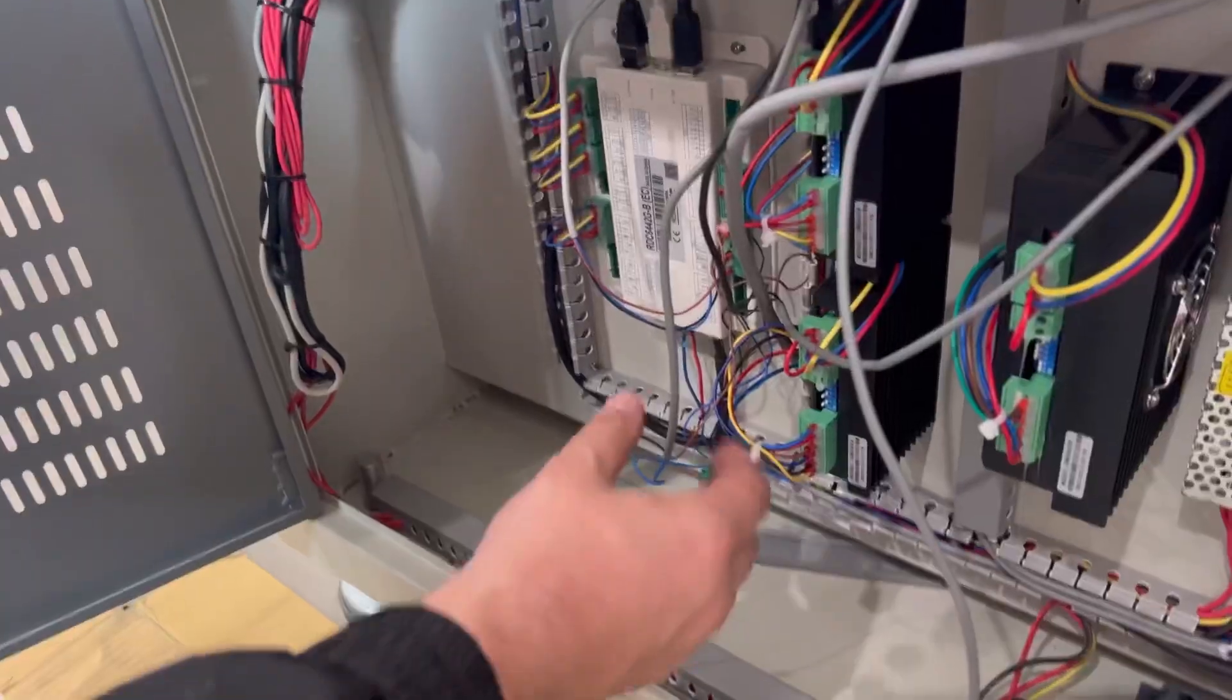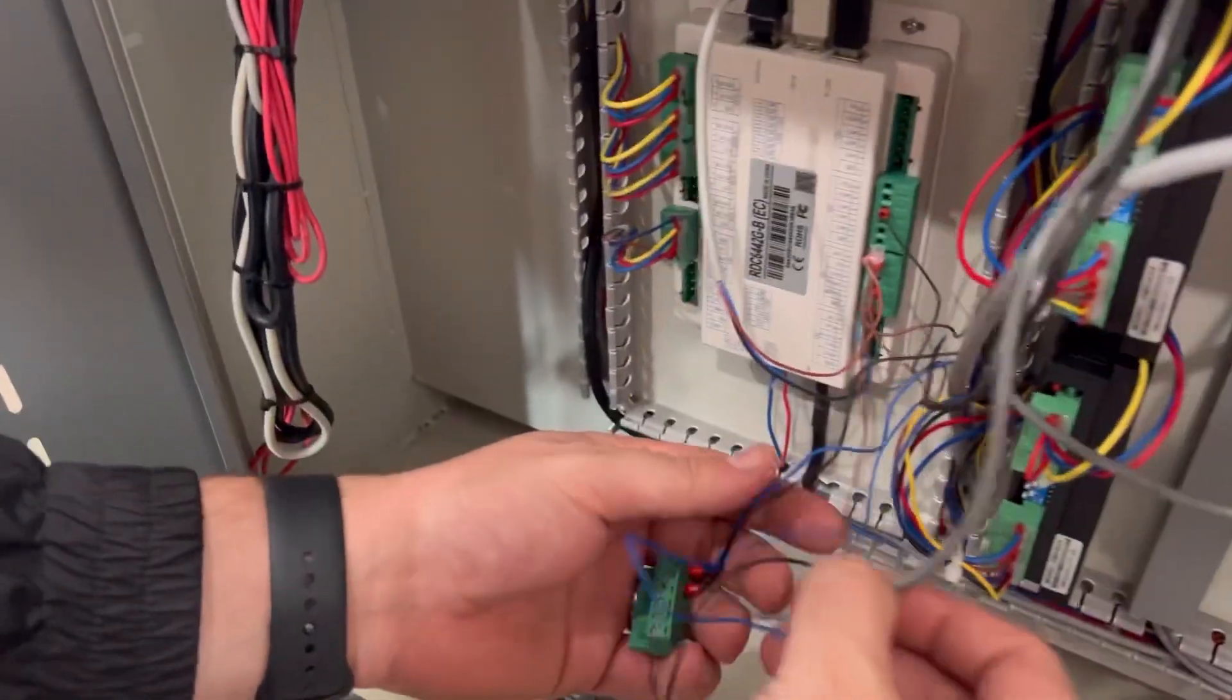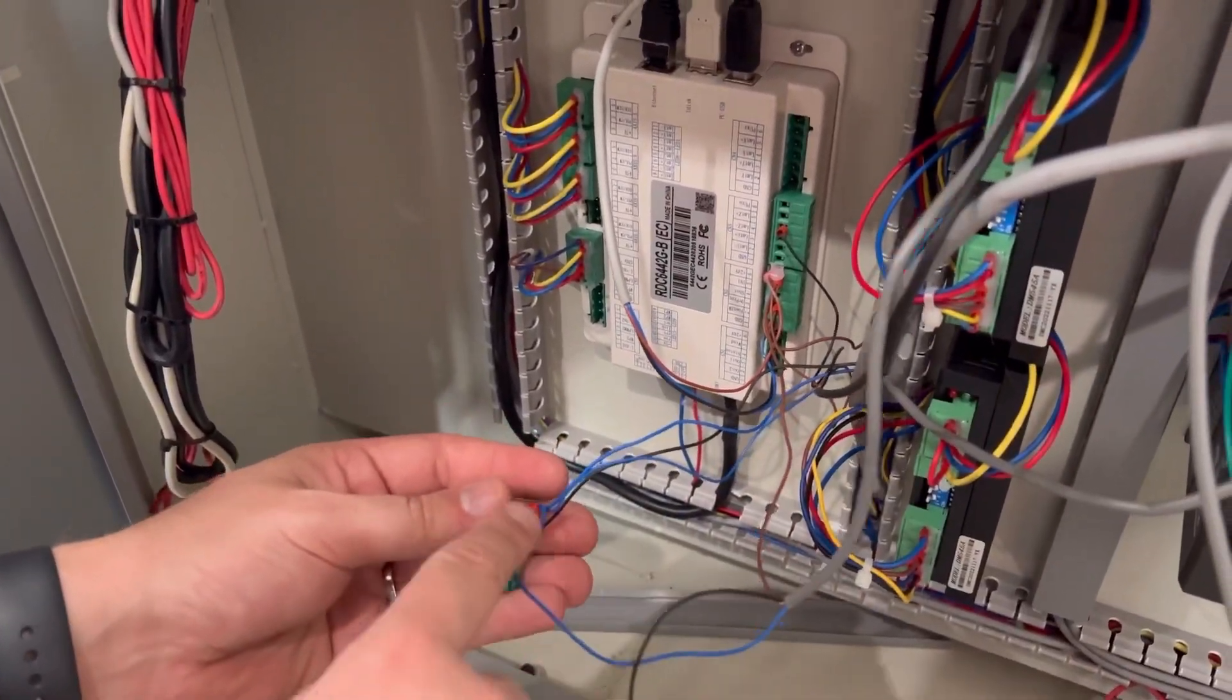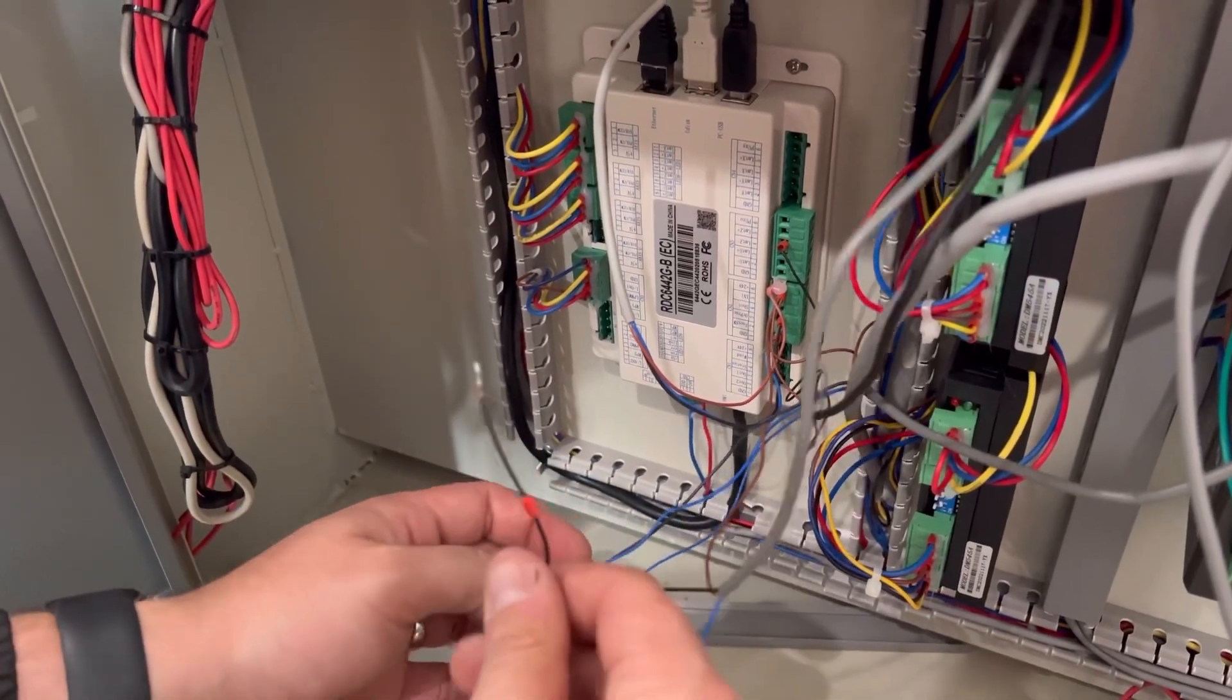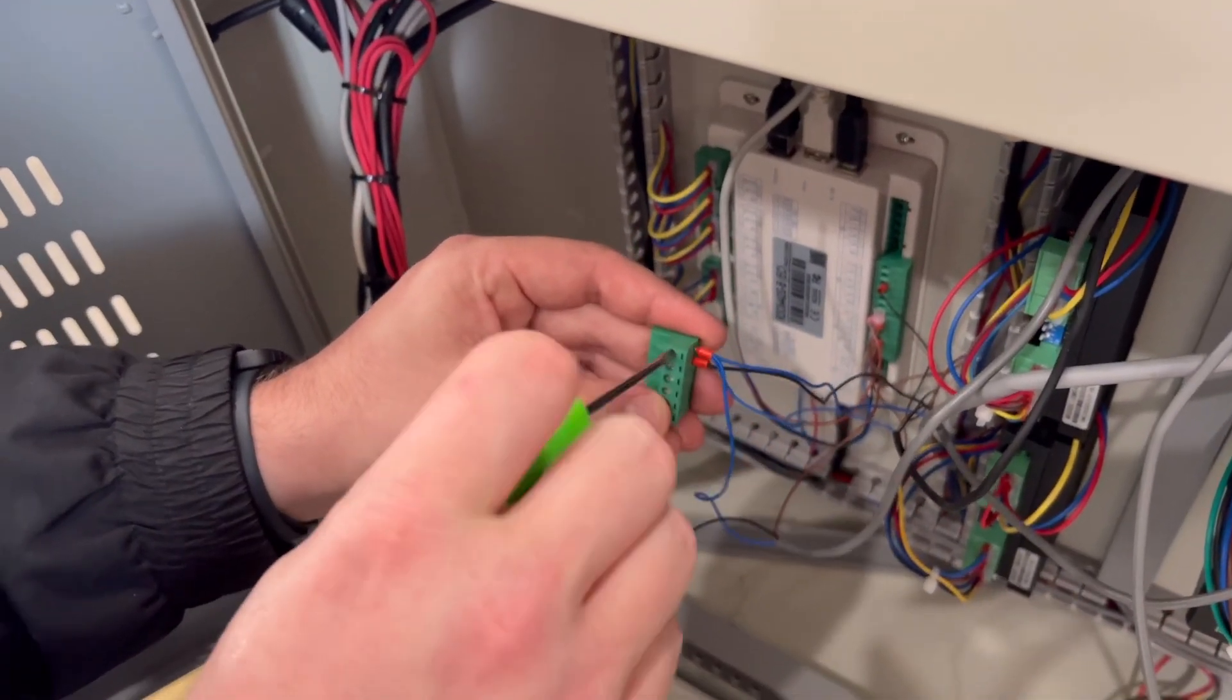Once you do that, remove the green connector from the board. On the side where the wire connects, there's a set screw. Use a small Phillips head screwdriver to loosen that set screw and pull out the old proximity wire.